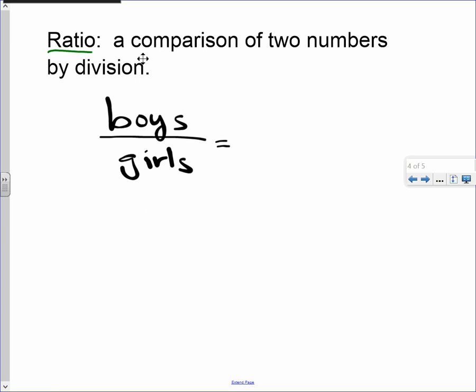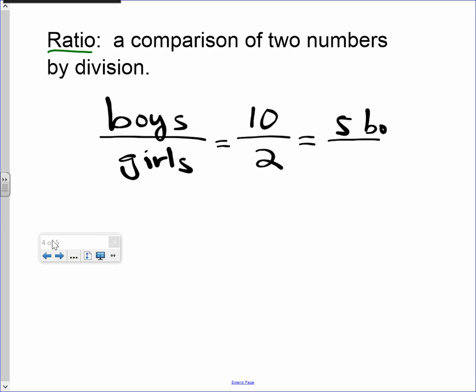The ratio of boys to girls, let's see, this is going to be 2, 4, 6, 8, 9, 10. There's 10 boys. There's 2 girls. So, for every 10 boys, there's 2 girls. If we reduce that, that becomes, for every 5 boys in this class, there's 1 girl. That's what a ratio is.